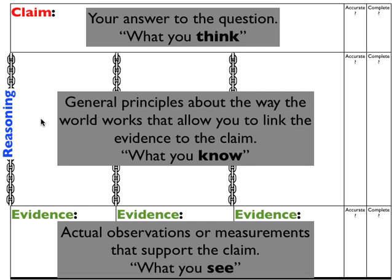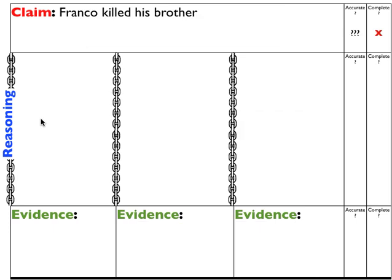Let's see how this works with Franco. I think Franco killed his brother. Is that complete? No, it's not complete because the question was 'Who killed Franco's brother and why?' So this is a nice start, but it's not there yet. He wanted his money. Now we have a complete response to the original question, so we have a complete claim.